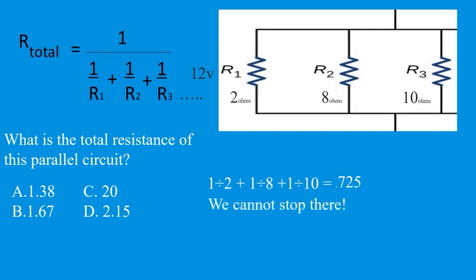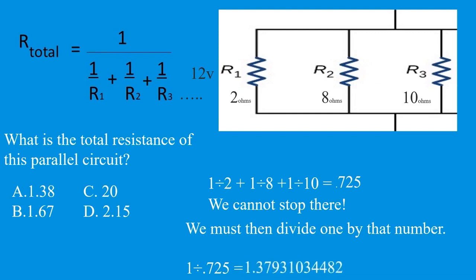We cannot stop there. We must then divide 1 by that number. That is going to give us 1 divided by 0.75. And that is going to give us 1.3793. We're just going to round up to 1.38. If you have chose to go with our testing center, we're going to have these questions on there. We also have detailed answers on how to work through the questions.